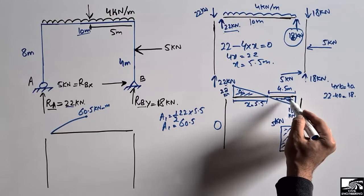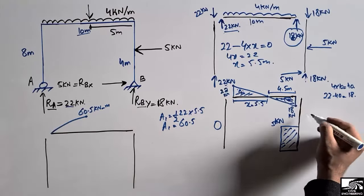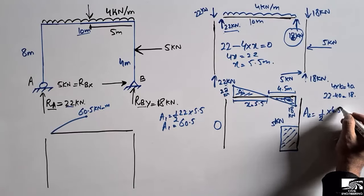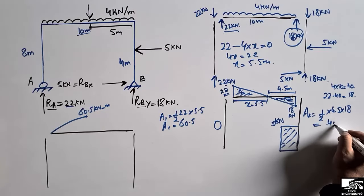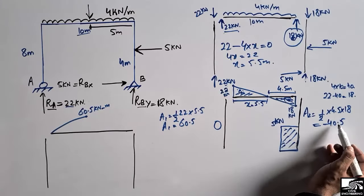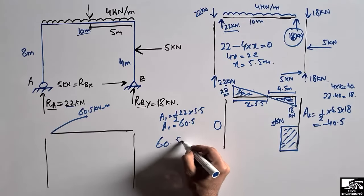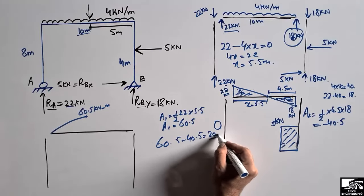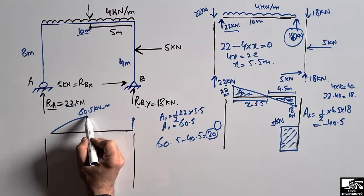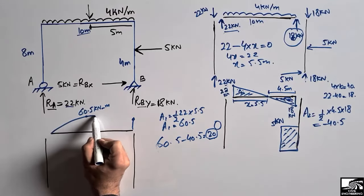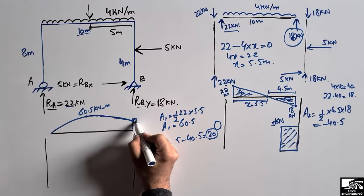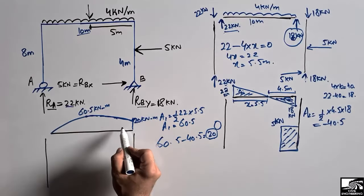The shear force on the right side of the zero-crossing is negative (downward). Area A2 = ½ × 4.5 × 18 = 40.5 kN·m (negative). The net bending moment at the beam-column joint is: 60.5 − 40.5 = 20 kN·m. This 20 kN·m acts in the negative direction at the joint.